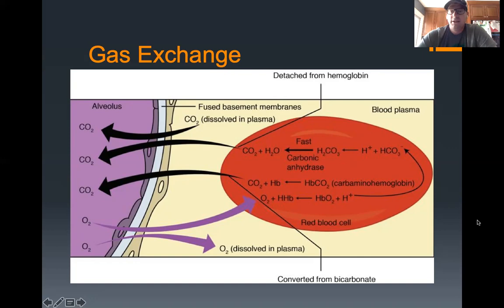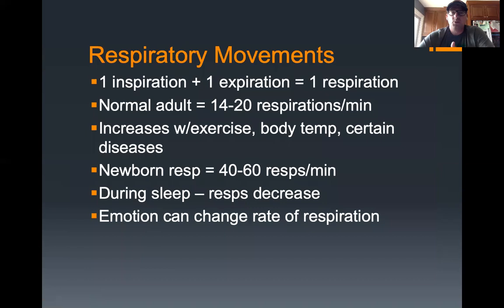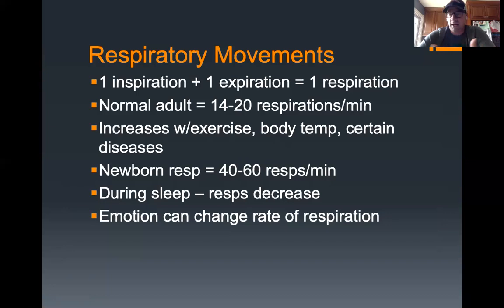One inspiration plus one expiration equals one respiration. In a normal adult, the breathing rate is 14 to 20 respirations per minute. That rate increases with exercise, an increase in body temperature, or certain diseases. A newborn typically has a rate of about 40 to 60 respirations per minute. During sleep, respirations decrease, and emotions like anger typically cause an increase in the rate of respiration.